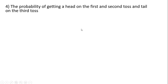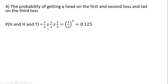The probability of getting a head on the first toss, a head on the second toss, and a tail on the third toss of a coin. The probability of a head on the first toss is one-half, a head on the second toss is one-half, and a tail on the third toss is also one-half. Multiplying these together gives our result.